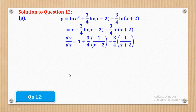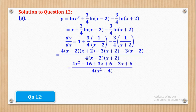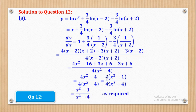So when I differentiate: differentiating x gives 1. The 3/4 is a constant so it remains outside, then differentiating ln(x minus 2) gives 1 over (x minus 2). The other constant remains, and differentiating ln(x plus 2) gives 1 over (x plus 2). When I get the LCM I come up with the combined fraction. When I open brackets and simplify, this term can cancel with that term to give the required expression.